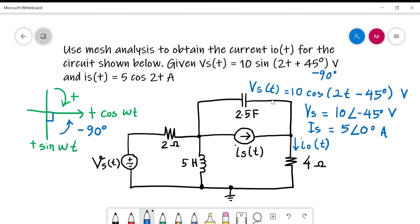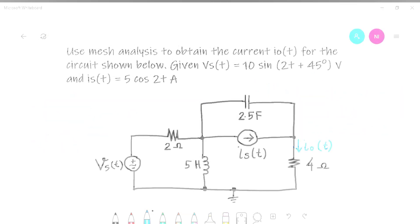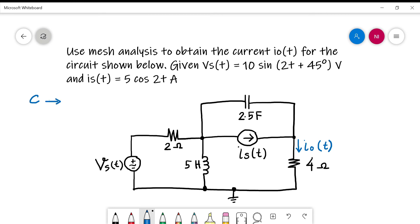Now, how to convert this capacitor and inductor to frequency domain? For capacitor, we must use the formula 1 over jωC, while for inductor is jωL. You know from sources, the omega is 2 radians per second.